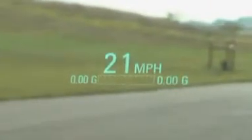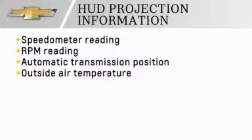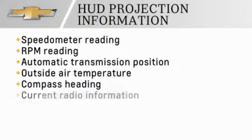Information displayed includes speedometer reading, RPM reading, automatic transmission position including tap shift gear selection, outside air temperature, compass heading, and the brief display of the current radio station, including Sirius XM information (subscription is required) or CD track.